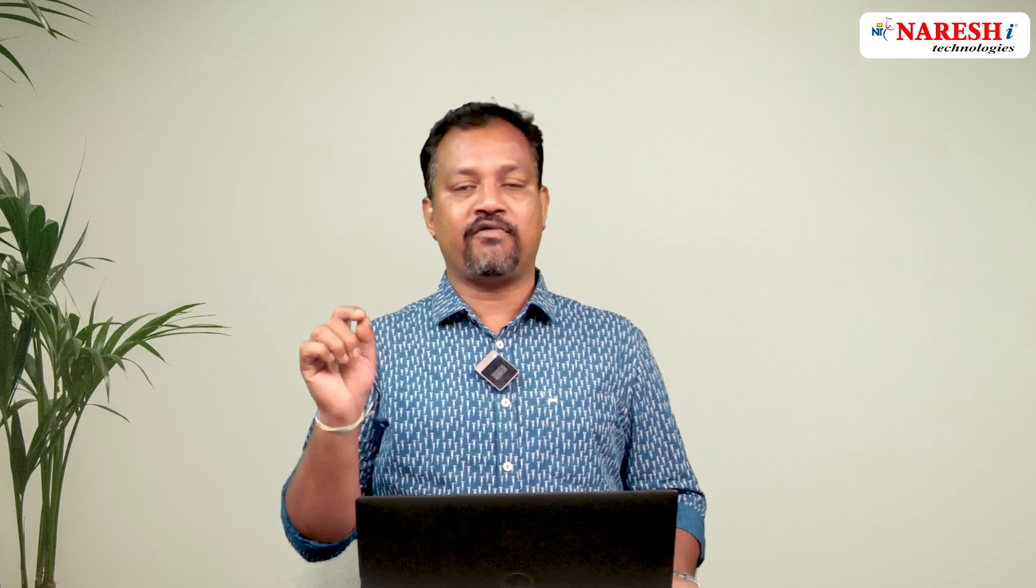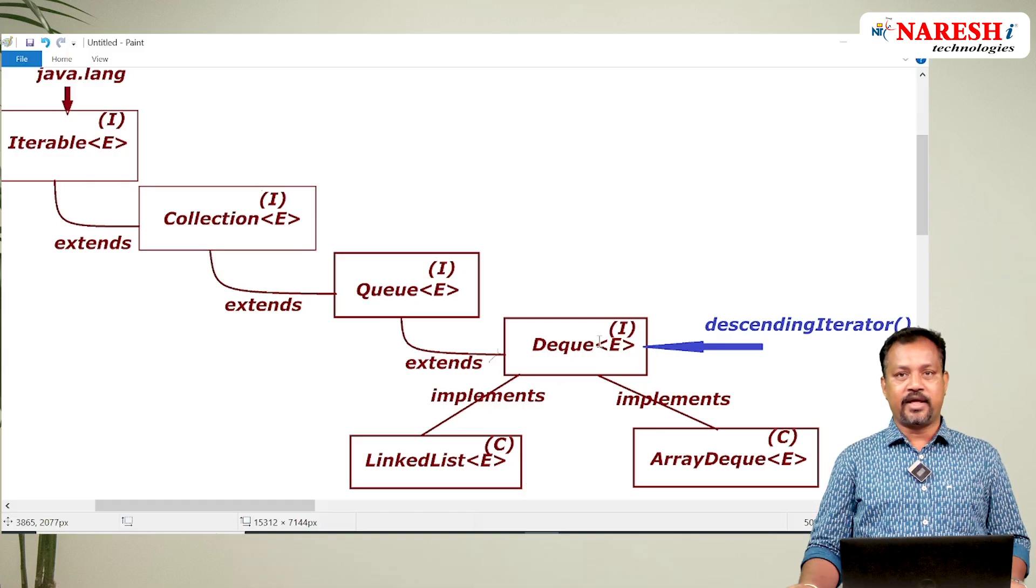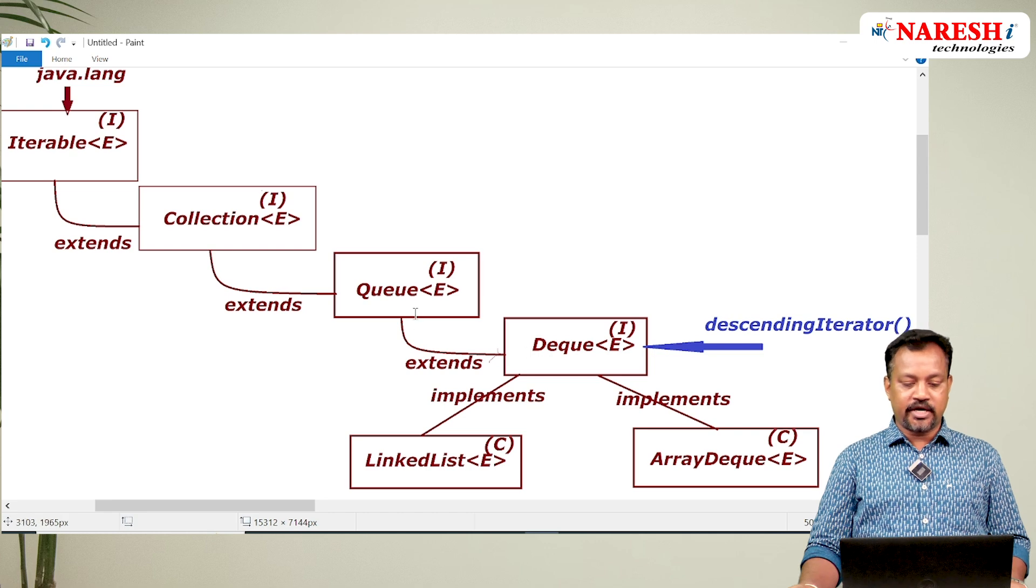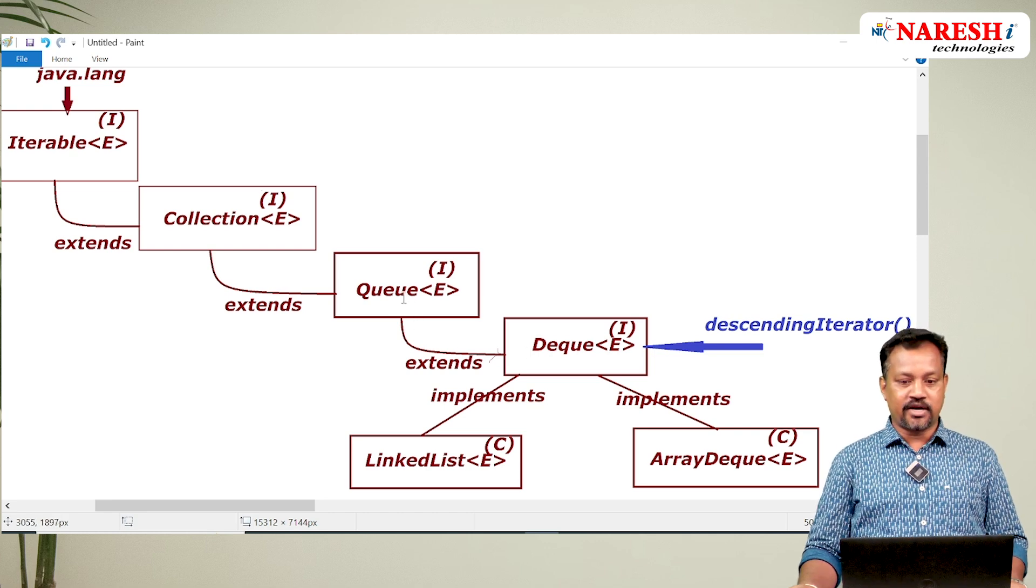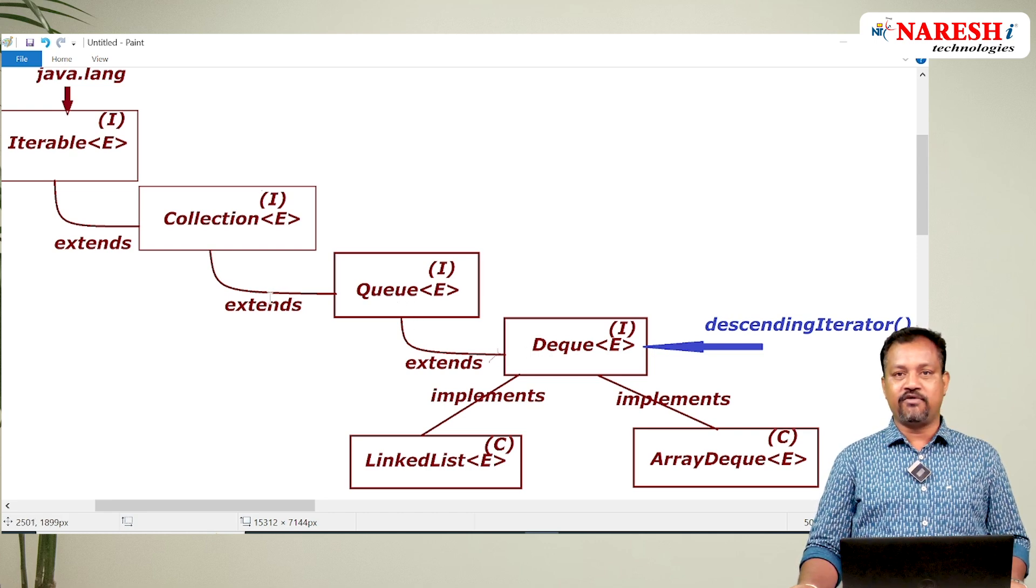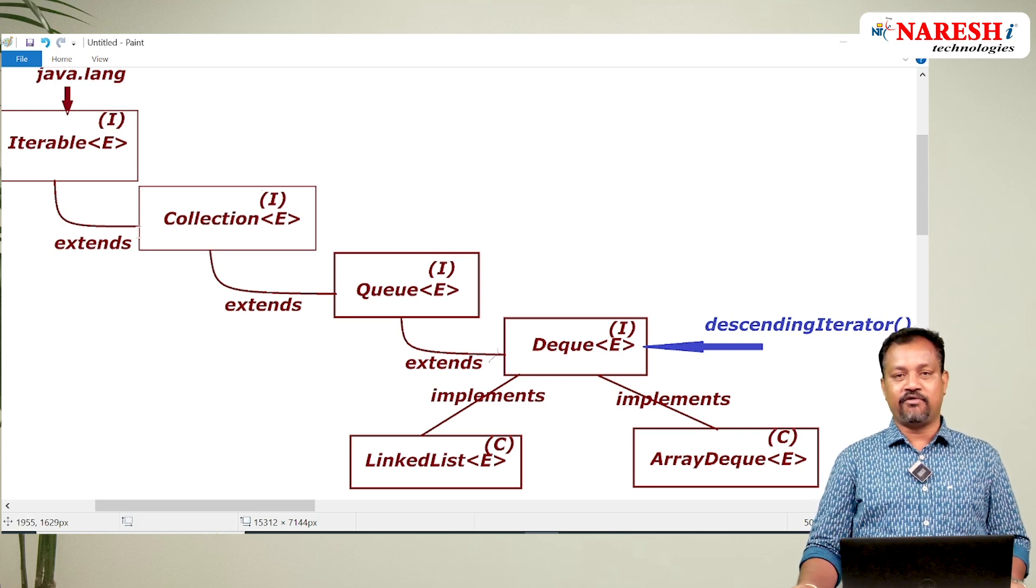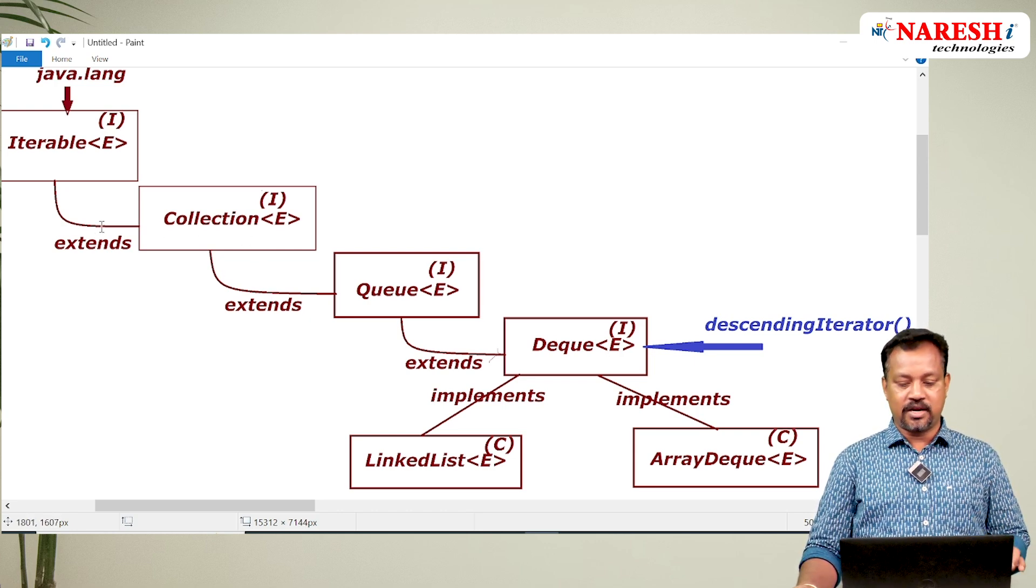Before discussing this descending iterator method, let us see the hierarchy of Deque. If you see the hierarchy, Deque is an interface which is extended from Queue interface. Queue is extended from Collection interface. Collection is extended from Iterable interface.